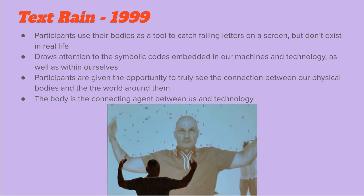In one of her first pieces, Text Rain from 1999, participants use their body as a tool to catch falling letters on a screen, but the letters don't exist in real life. It draws attention to the symbolic codes embedded in our machines and technology, as well as within ourselves. Participants are given the opportunity to truly see the connection between our physical bodies and the world around them. This was just the beginning of her using the body as a tool in her art.